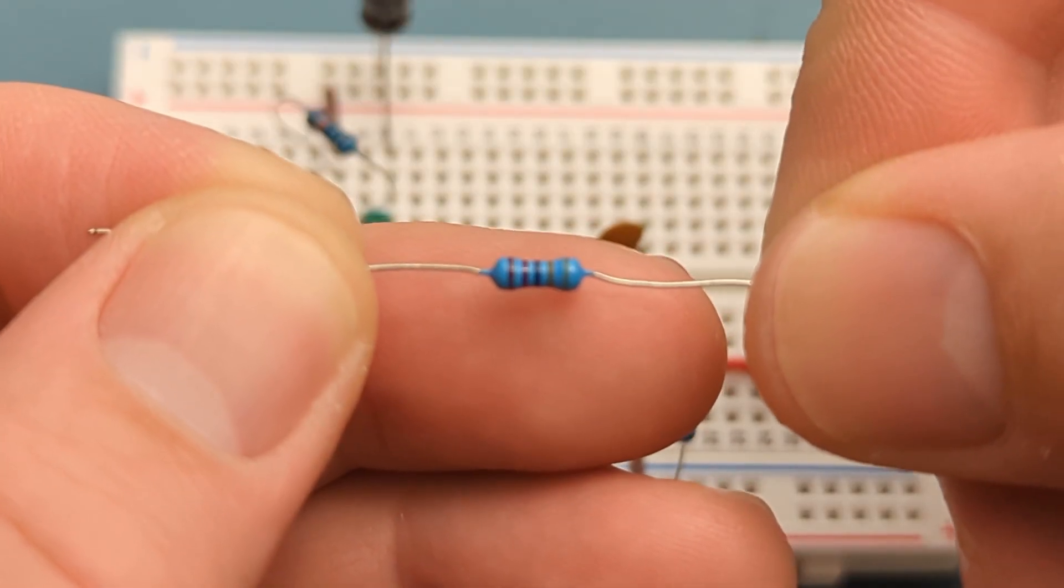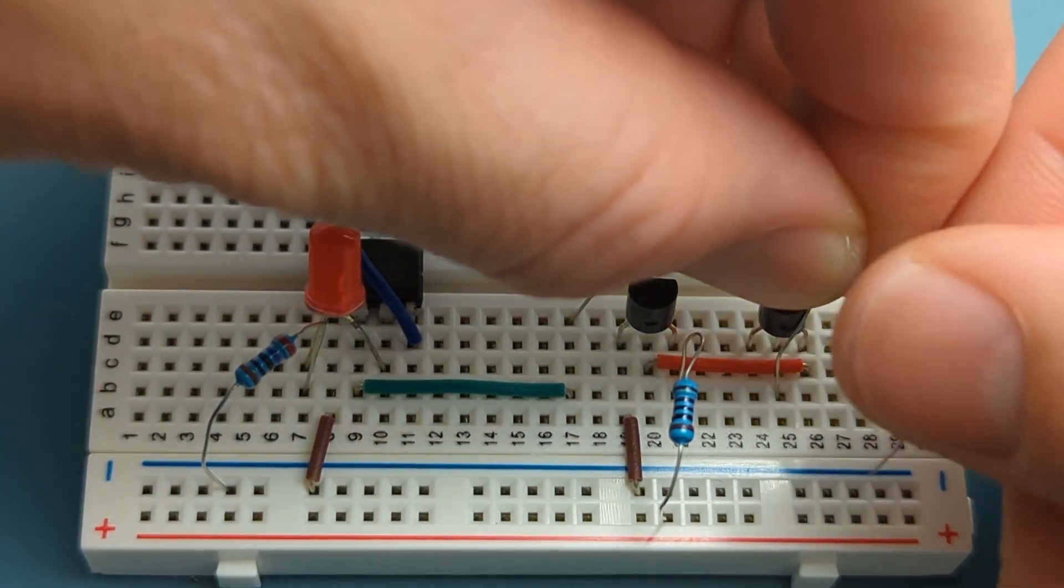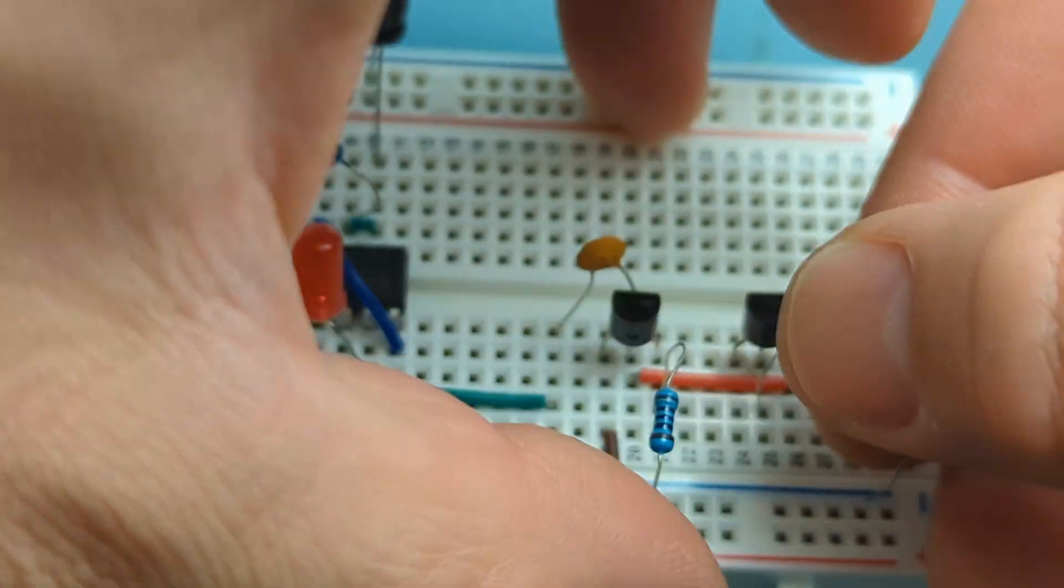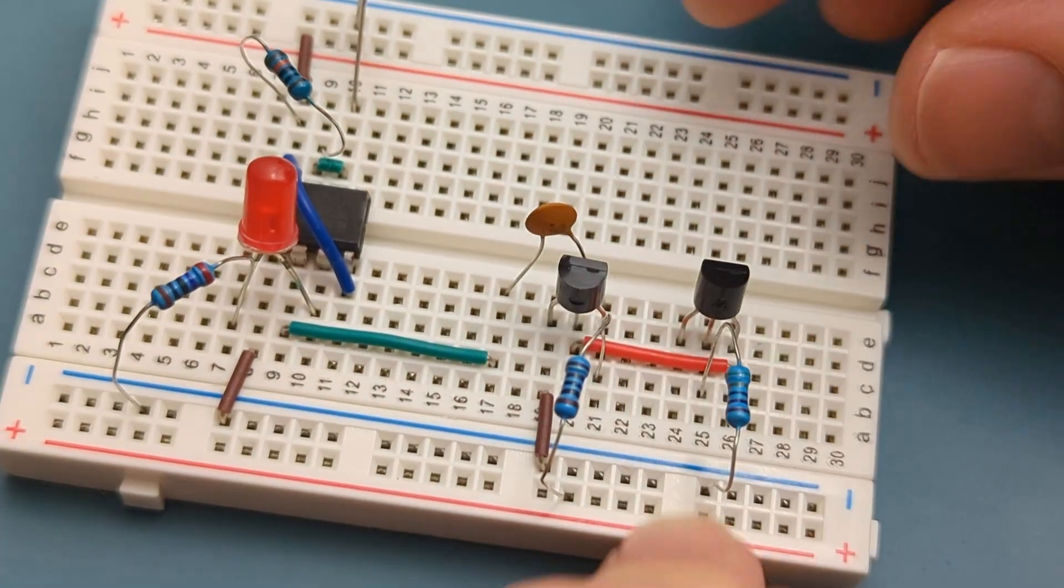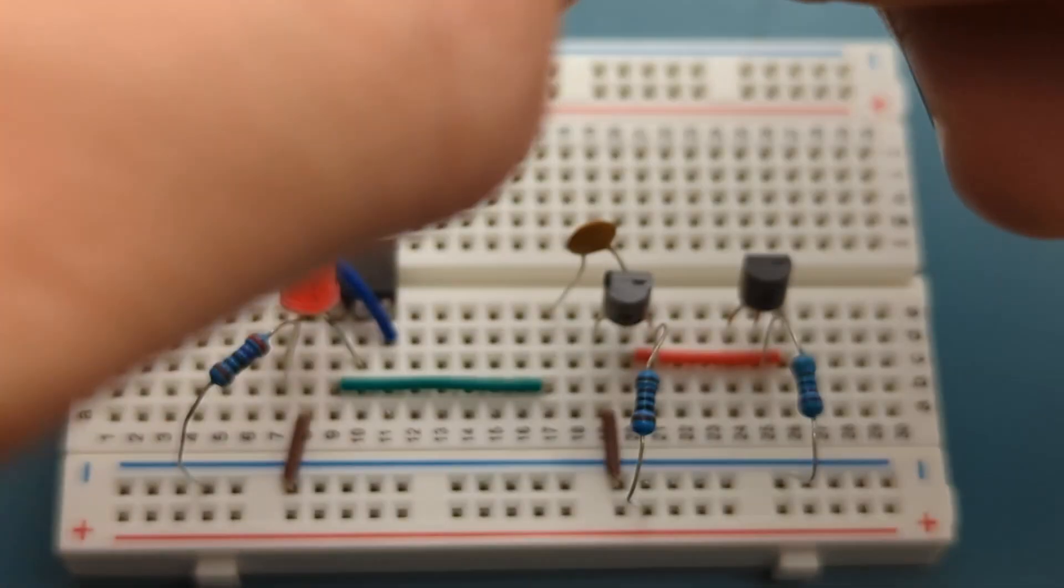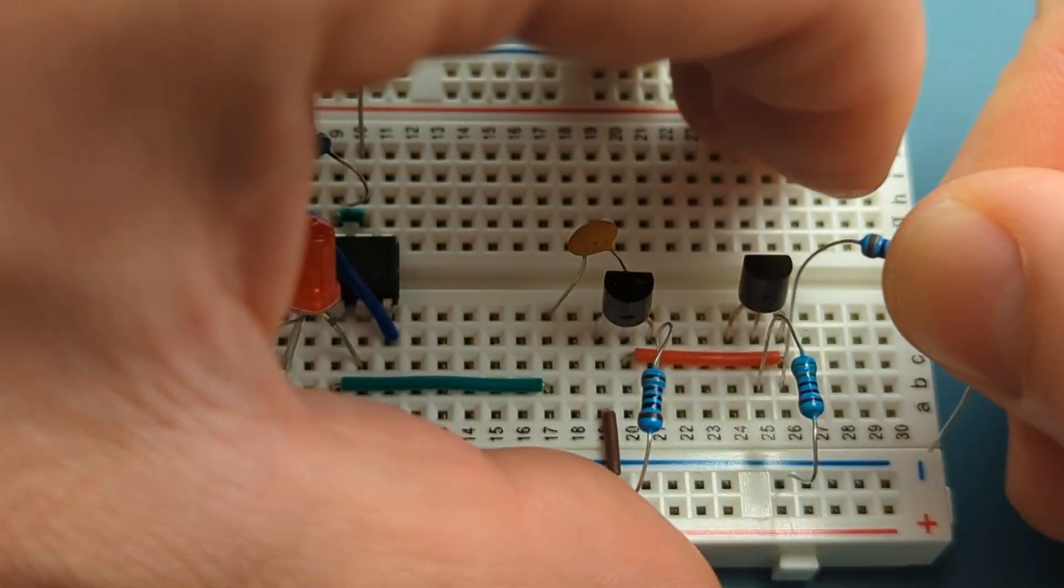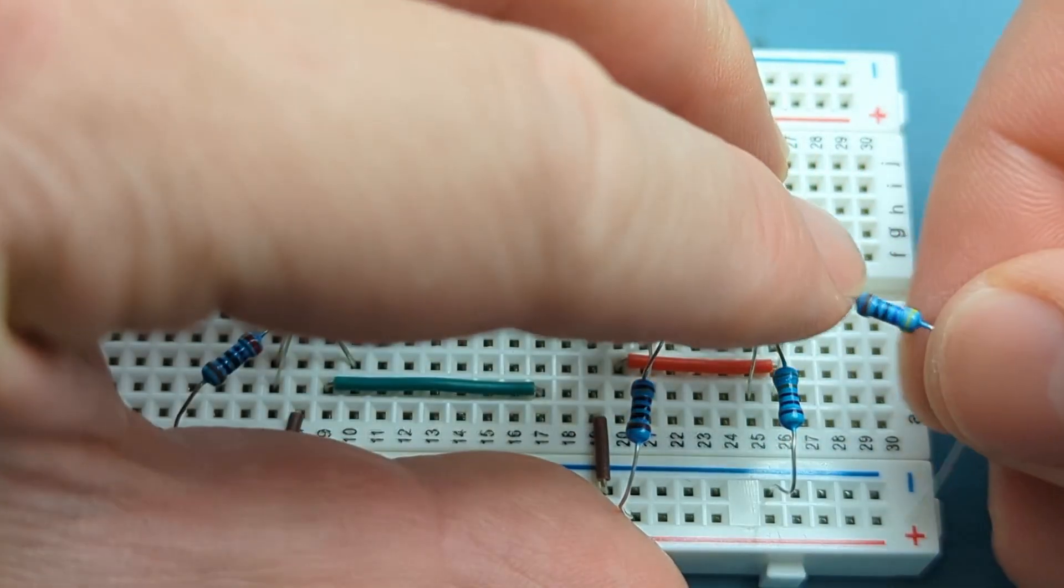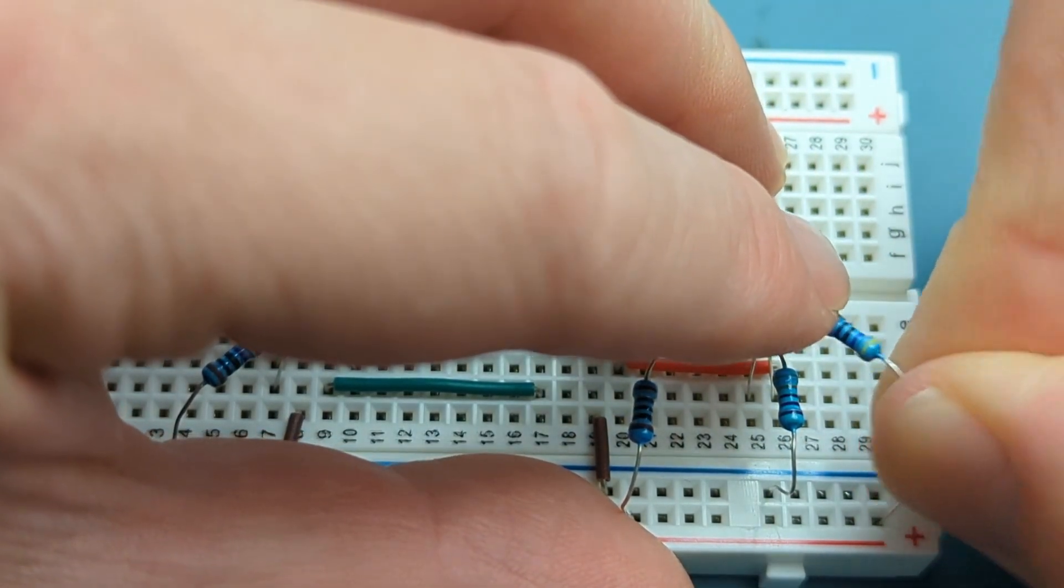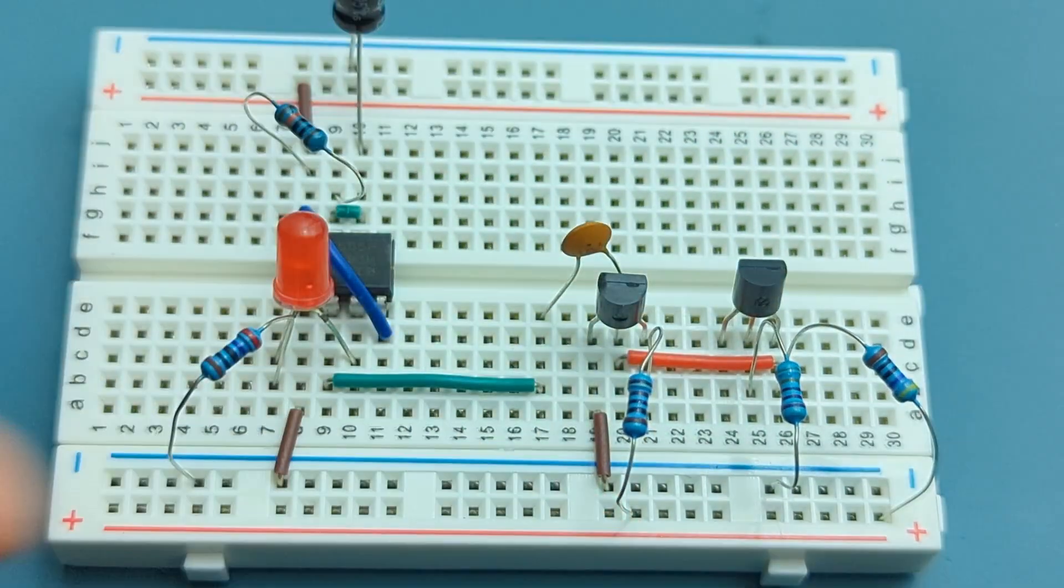Bend the ends of a 3300 ohm resistor. Insert the 3300 ohm resistor into the same row as the base of the transistor and the negative rail. Bend the ends of a 470 ohm resistor. Insert the 470 ohm resistor into the same row as the collector of the transistor and the positive rail. Insert a jumper wire into the same row as the emitter and the negative rail.